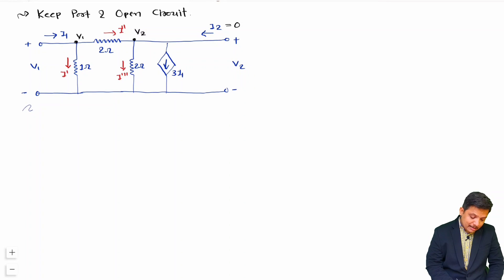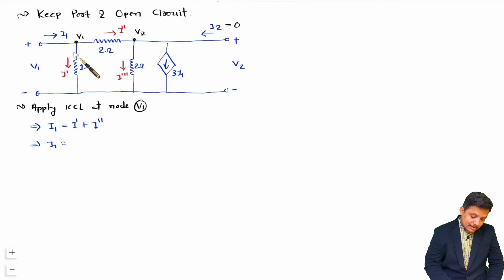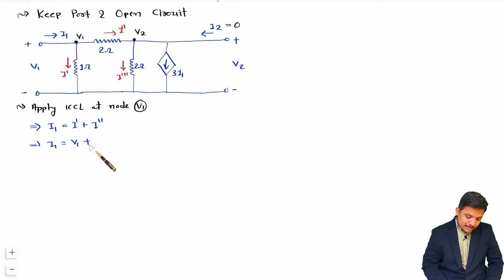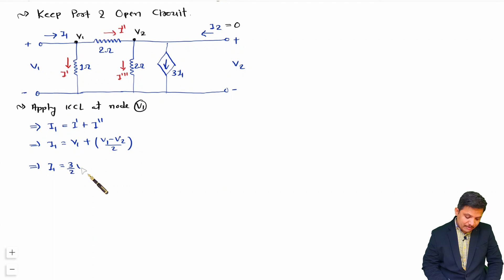Applying KCL at node V1 — entering current equals leaving current. Entering current is I1 and leaving currents are I' and I''. I' equals V1/1 and I'' equals (V1 − V2)/2. Therefore: I1 = V1 + (V1 − V2)/2, which simplifies to I1 = (3/2)V1 − (1/2)V2. This is Equation 1.